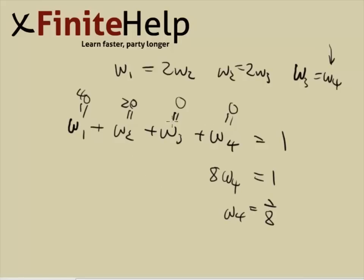And then you can just figure out the rest if you needed to. So w3 would be the same thing. And then w2 would be two eight or one fourth. And then w1 would be four eight. But w4 is the only answer you need, so here's the answer.